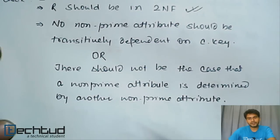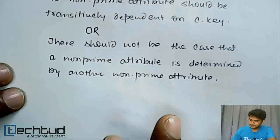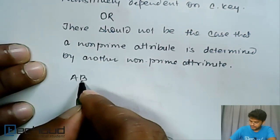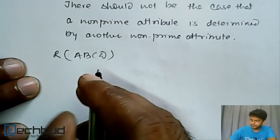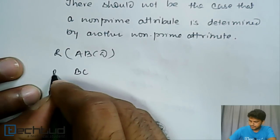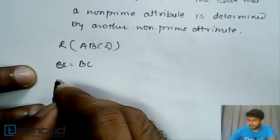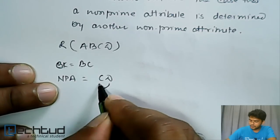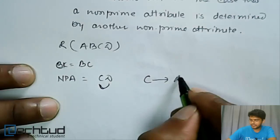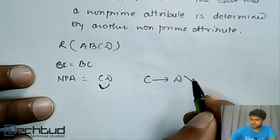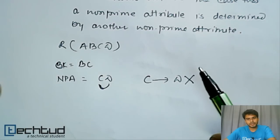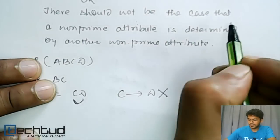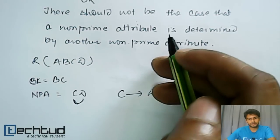The second condition is that no non-prime attribute should be transitively dependent on the candidate key. For example, in a relation R(A, B, C, D) where B and C form the candidate key, the non-prime attributes are D and E. There should not be a functional dependency where C determines D — that is, a non-prime attribute determining another non-prime attribute should not exist.